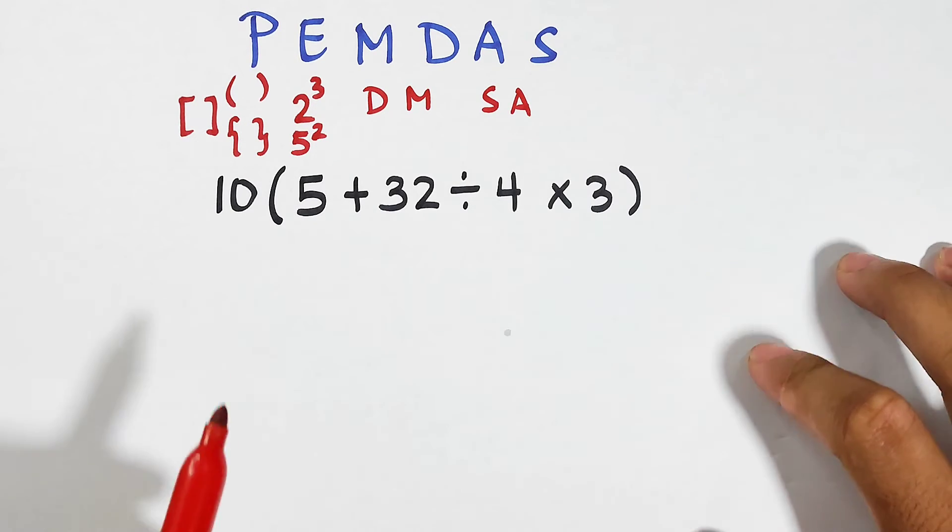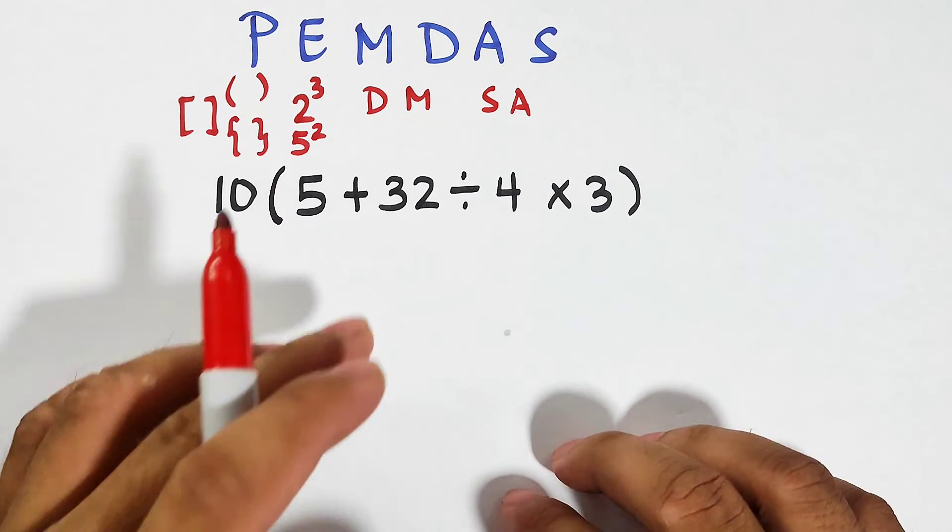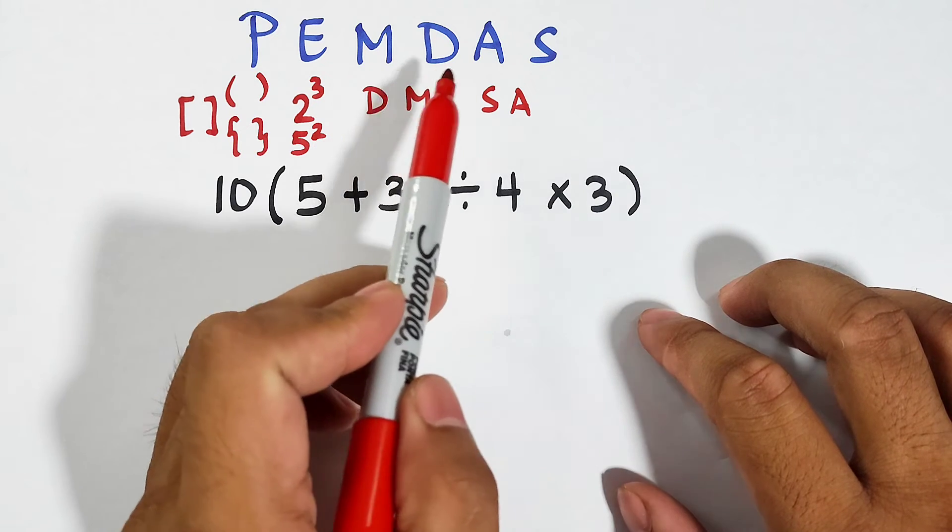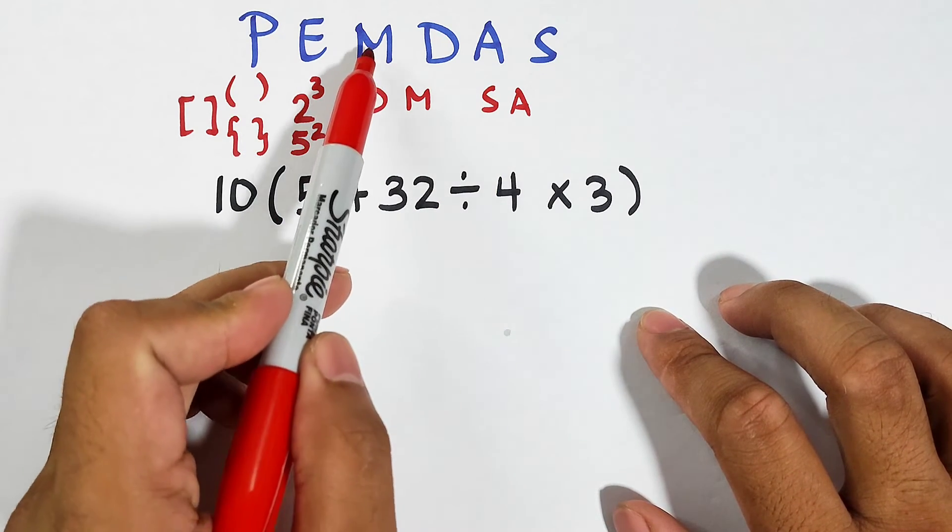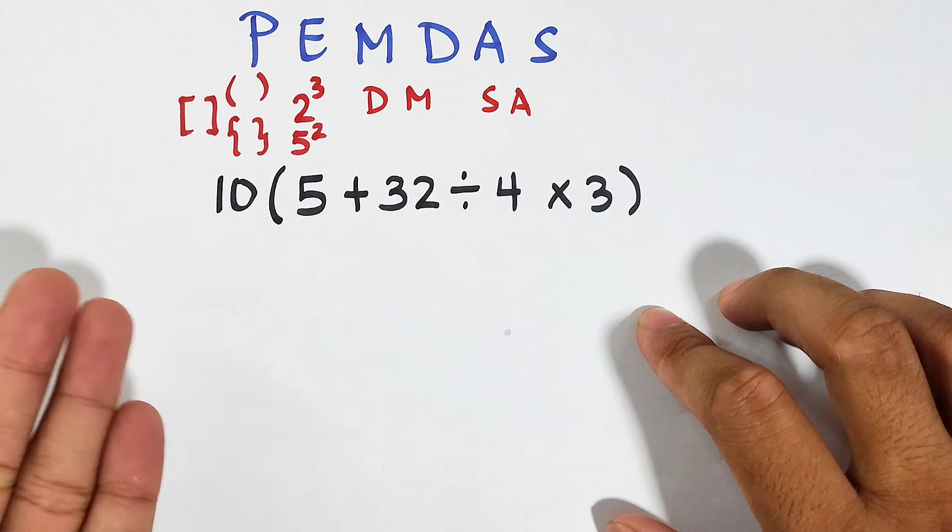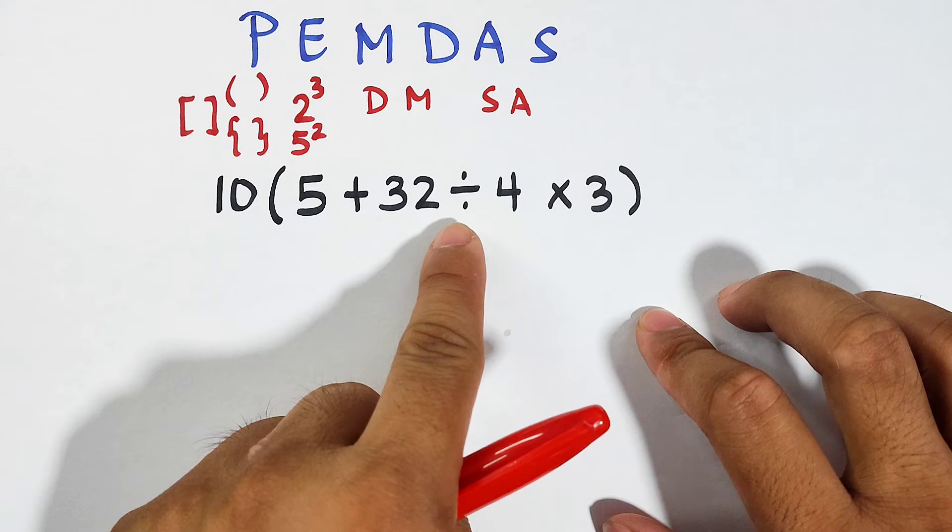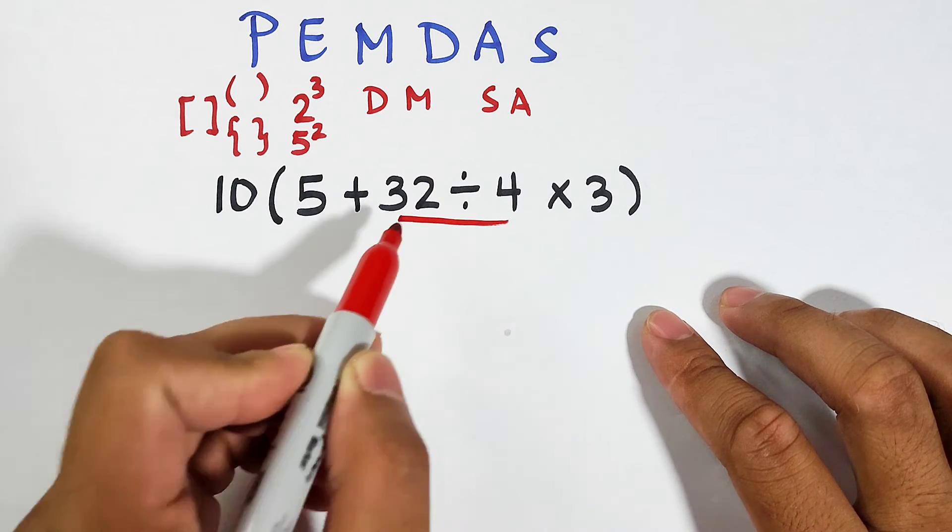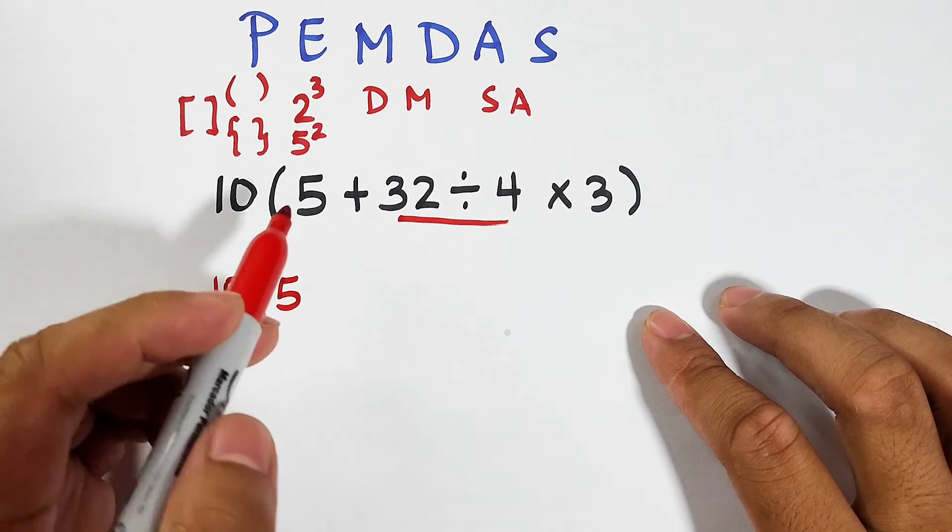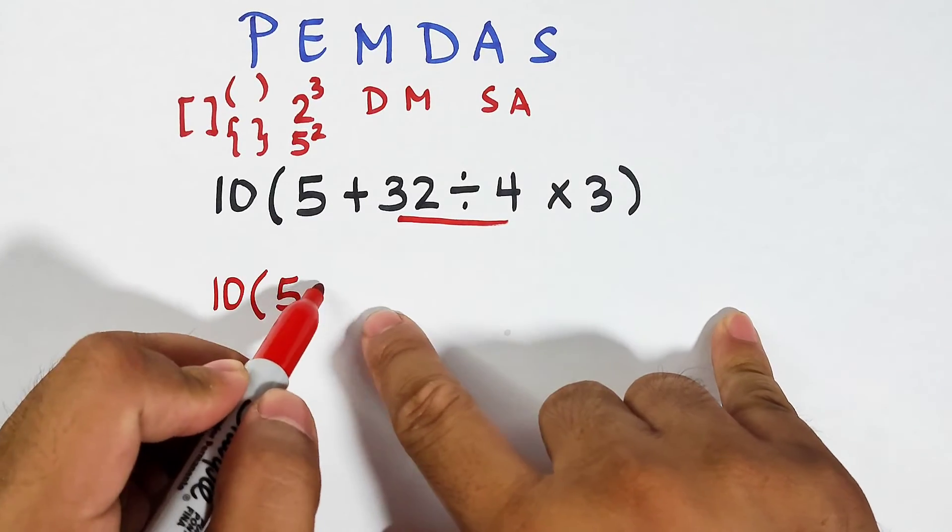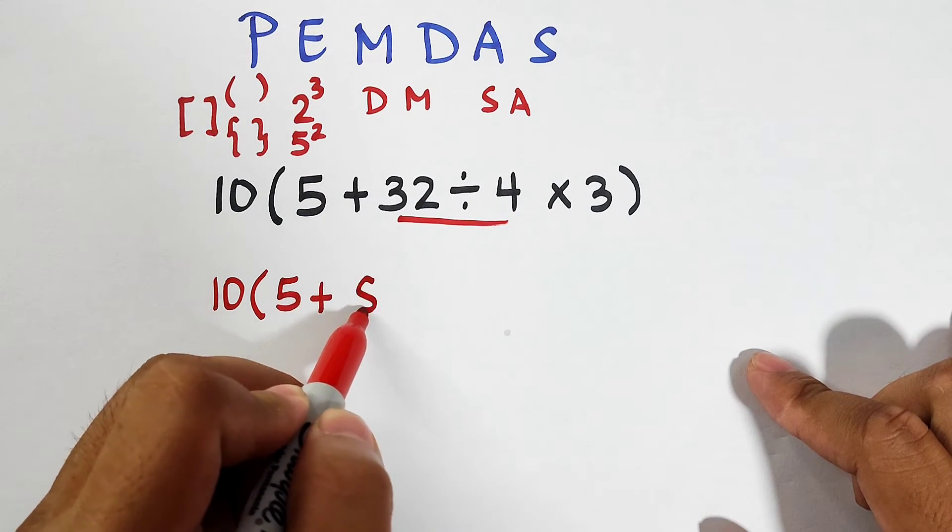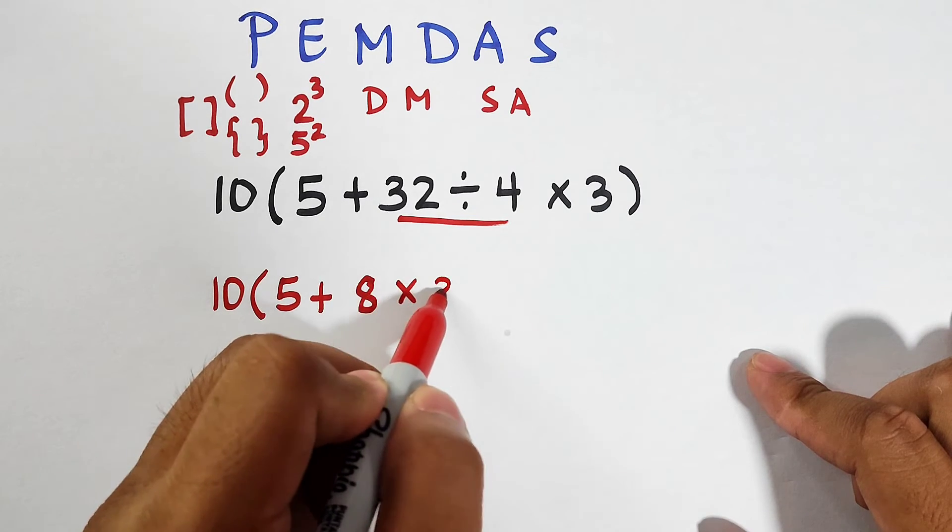Now here's the question: Am I going to add, divide, or multiply? Look at MDAS. So it's either multiplication or division. So look, the first operation that comes from the left is division. So we will go first with division. We will copy 10, and then we have plus 32 divided by 4 that is equal to 8, then copy times 3.